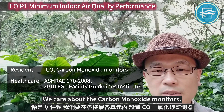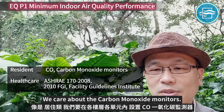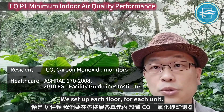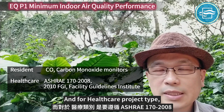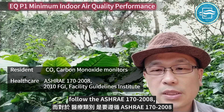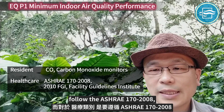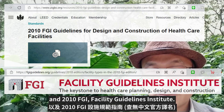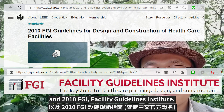There are additional requirements for different project types. For residential, we care about carbon monoxide monitors — set up one per floor, per unit. For the healthcare project type, follow HRSA 170-2008 and the 2010 FGI, Facility Guidelines Institute.